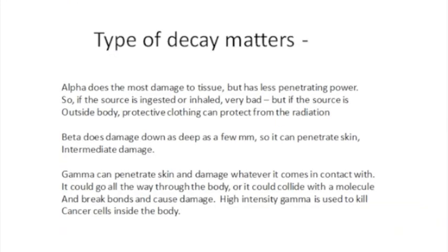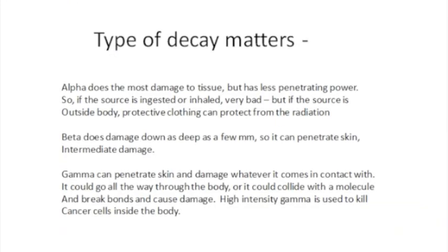The type of decay matters — whether it's alpha, beta, or gamma — when it comes to biological effects. Alpha does the most damage to tissue, but it has less penetrating power. So if the source is outside the body, you can normally protect yourself with protective clothing, but if the source is ingested or inhaled inside the body, it can be very bad because tissue damage will occur.